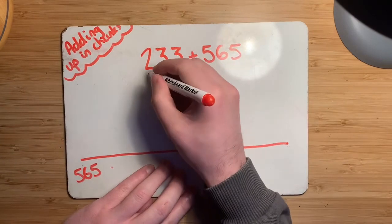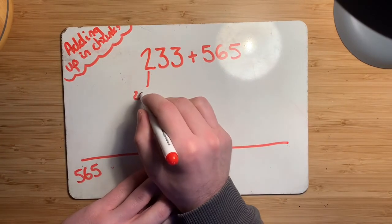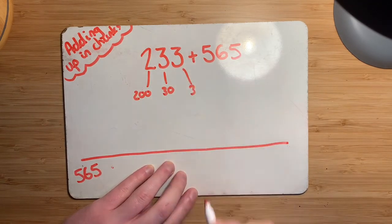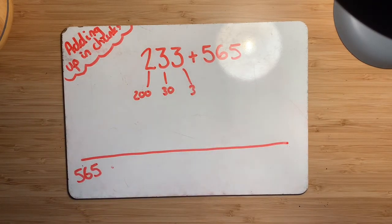So again, you might want to start with place values. So you might want to start with, well, that's a 200, that's a 30, and that's a 3. And you might already think, well, that's fine actually, I quite like those chunks. Those are quite nice, easy chunks to add on.